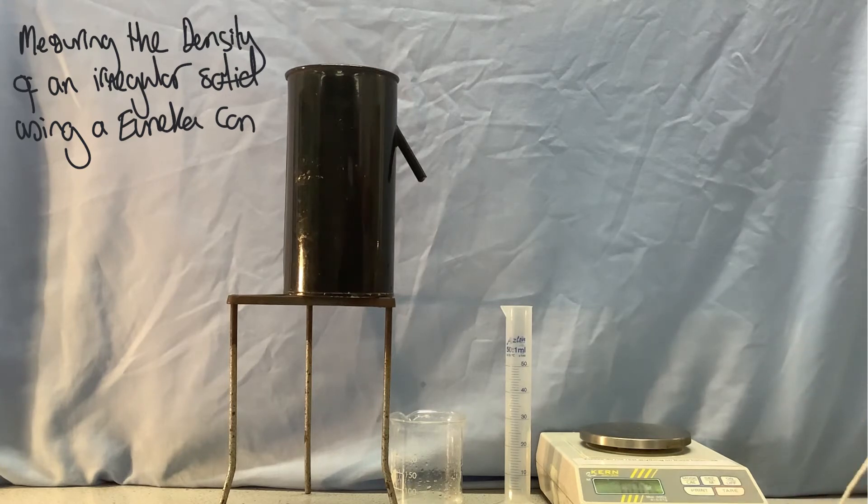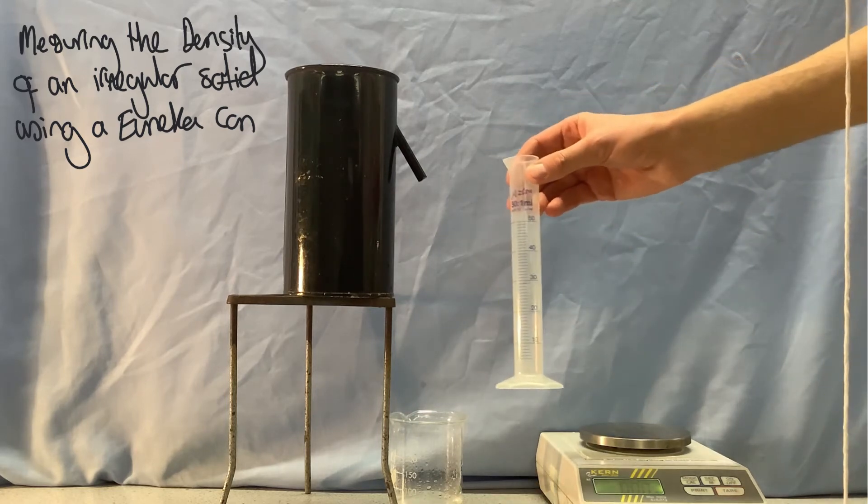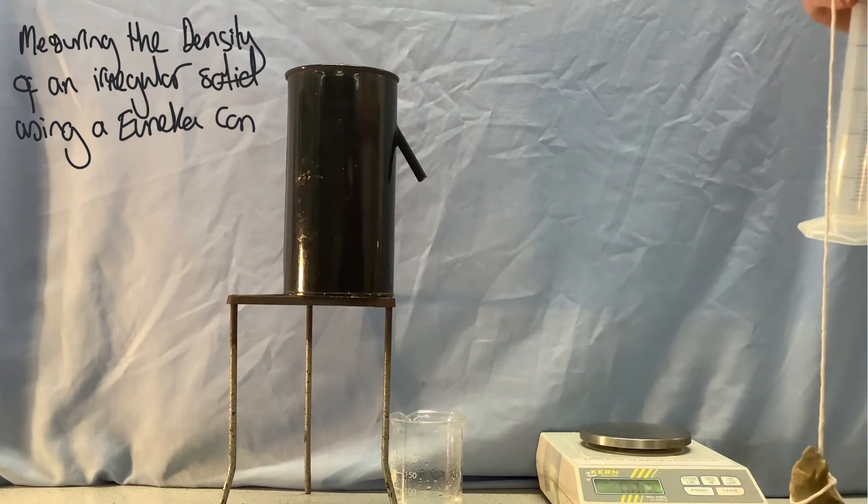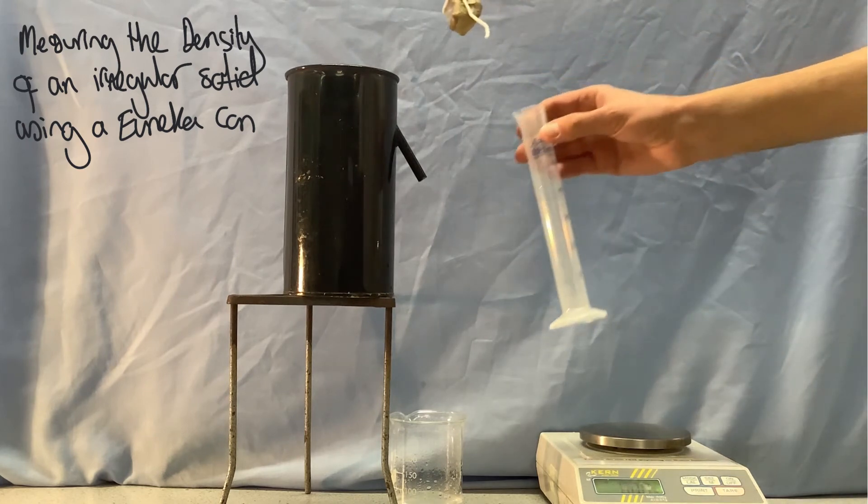Once that's finished, I will then be able to lower this into the Eureka can and catch the water that comes out in this measuring cylinder. This is dry, so there's nothing in it to start with. Okay, so I think that's probably finished dripping.